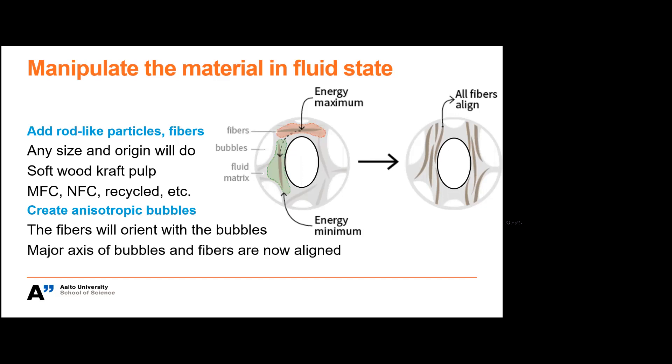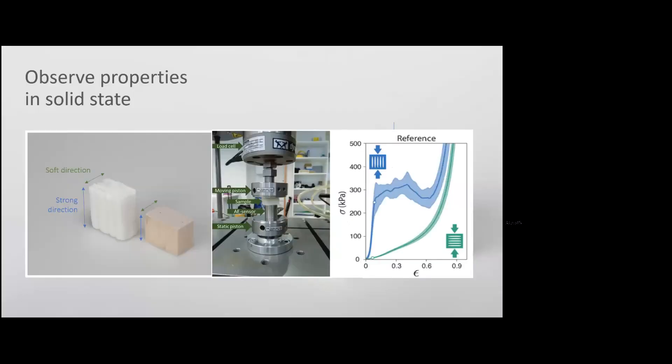So why do I want to orient the bubbles? Because it makes a really strong foam. One of the goals in this project was how much stronger we can make a foam in one direction compared to the other. And the best so far is that it's 40 times stronger along the bubbles or along the fibers than across the bubbles. So on the right hand side figure is the stress versus strain or force displacement curve when you compress the foam and the blue block is much much stronger than the green block.